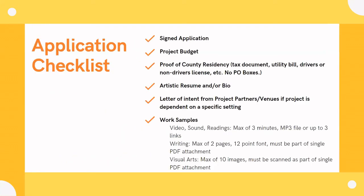Here's the application checklist — everything you need to fully submit your application: your signed application form, your project budget, proof of county residency (such as a tax document or utility bill), your artistic resume and/or bio, a letter of intent from project partners or venues, and your partnership letter and associated documents covered in the previous video.